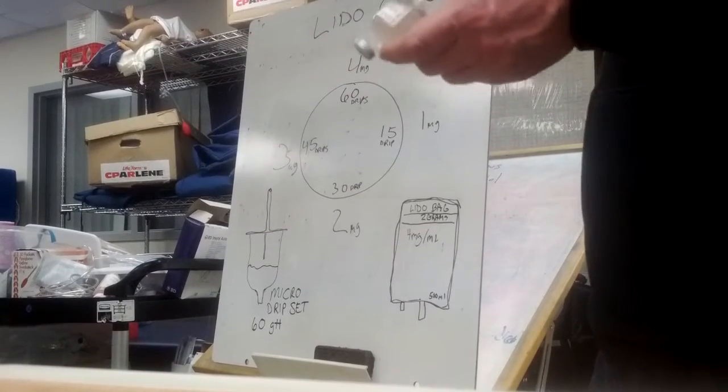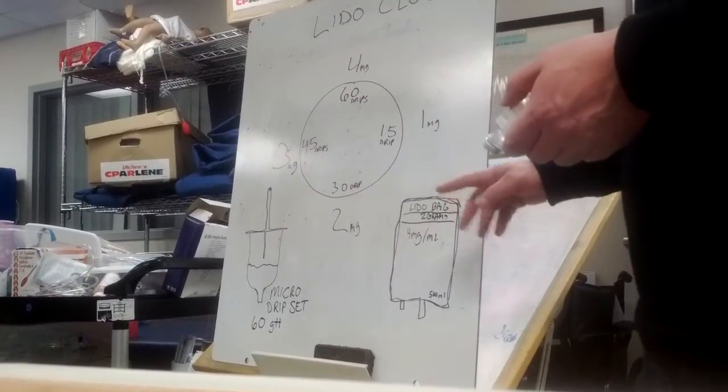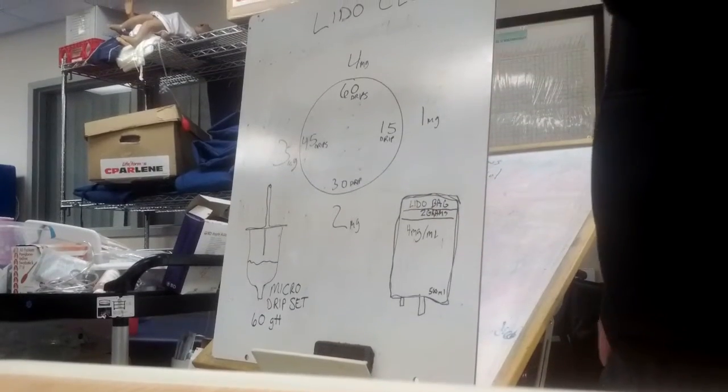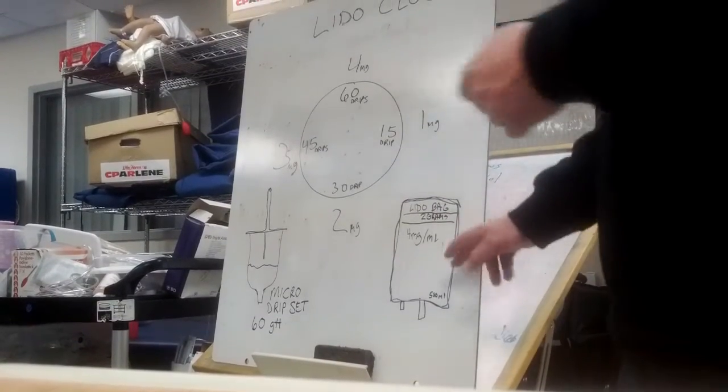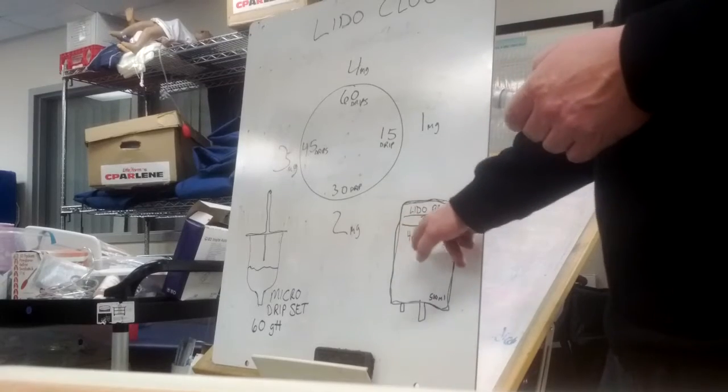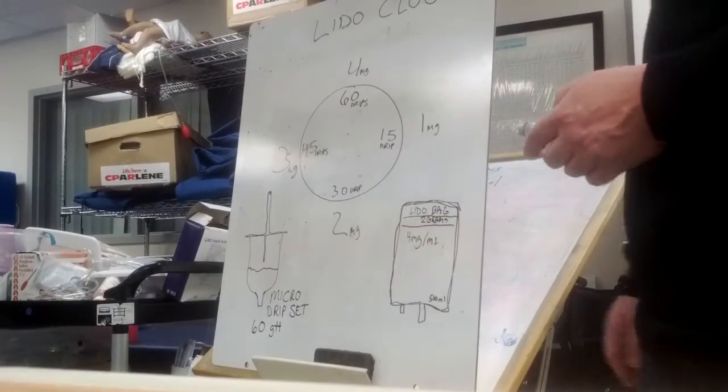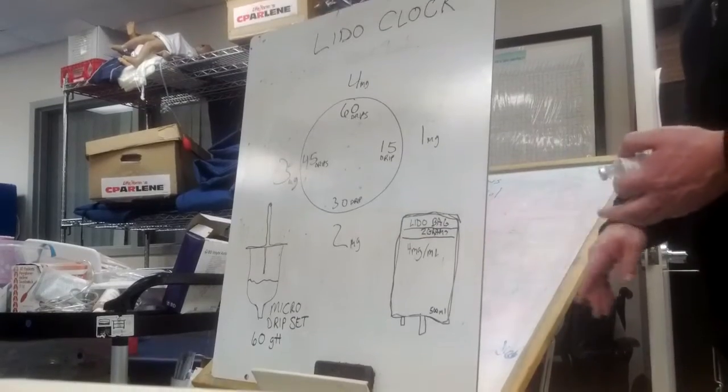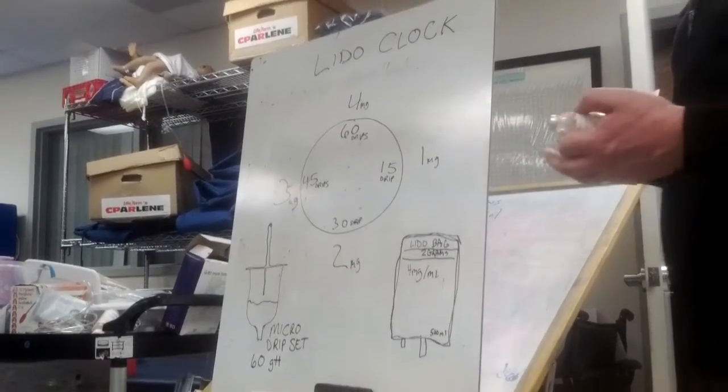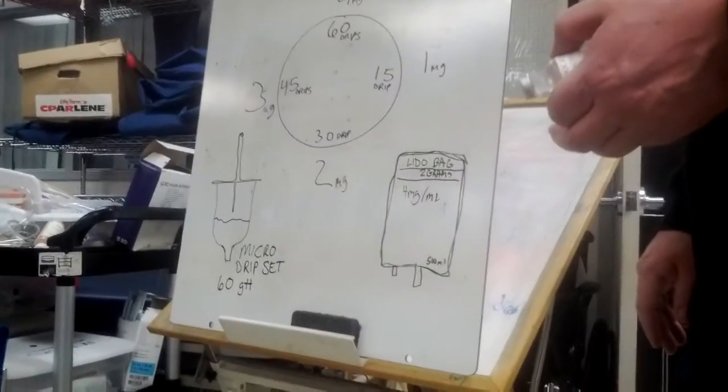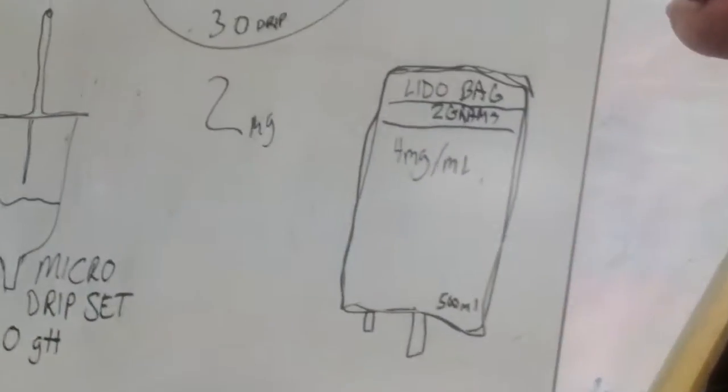The old-school 500 bag has four milligrams per ml - two grams in 500. Four milligrams per ml. In the 250 bags it's one gram.